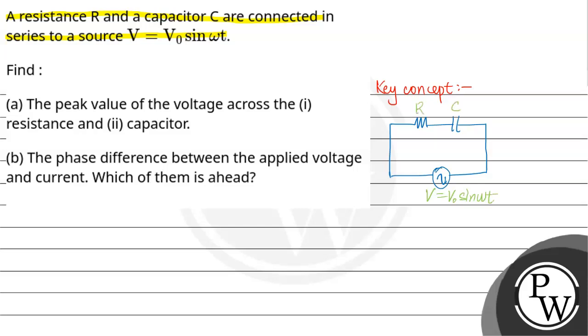The impedance formula is Z equal to square root of R² plus Xc². Xc formula is 1 by ωC. Omega is 2πf. Xc equals VRMS divided by IRMS.